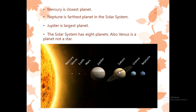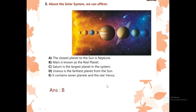There are 8 planets. Jupiter is the largest planet, Mercury is the closest planet to the sun, Venus is a planet — not a star — and Neptune is the farthest planet. Now read the options: the closest planet to the sun is Neptune? No. Mars is known as the red planet? Yes. Saturn is the largest planet? No — Jupiter is. Uranus is the farthest planet from the sun? No — Neptune is the farthest.